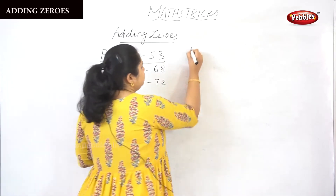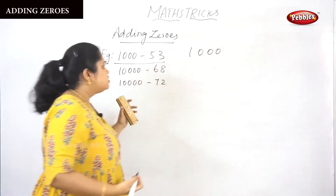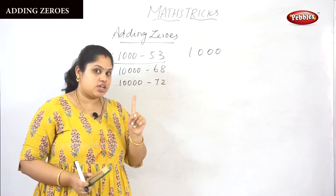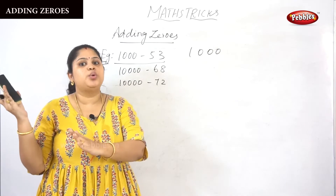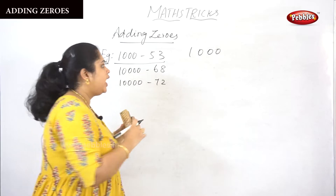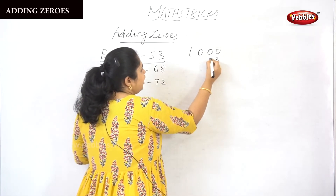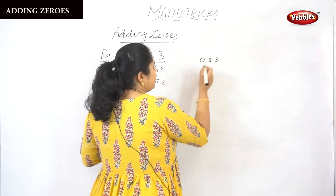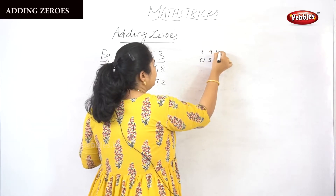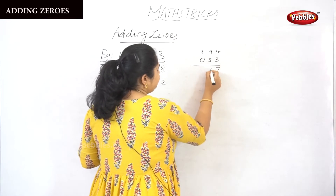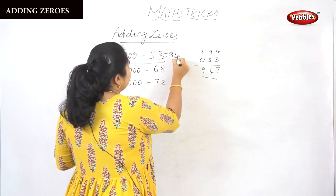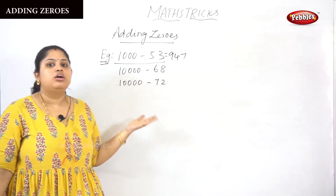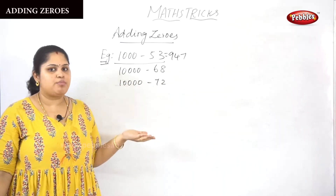1000 minus 53. So here how many zeros are there? Three zeros. Here how many digits? Only two digits. The condition requires equal zeros and equal digits. Here one digit is missing, so you should add a zero to it — that is 0, 5, 3. Now as usual, all from the nine and the last from the ten: 7, 4, 9. So 947 is the answer. If the numbers are not equal, don't worry — just add a zero and you can perform the subtraction.